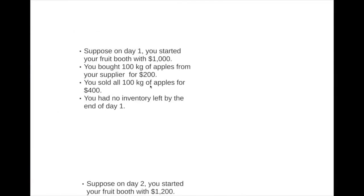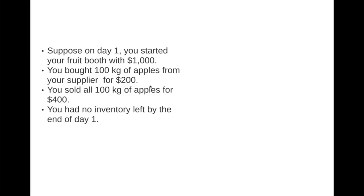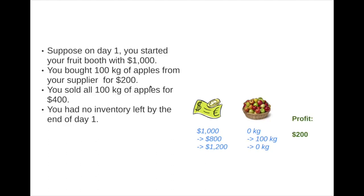Here we have three scenarios. Suppose on day one, you started your fruit booth with $1,000. You bought 100 kilograms of apples from your supplier for $200. You sold all 100 kilograms of apples for $400. You had no inventory left by the end of day one. Summarizing all transactions: you started with $1,000, went down to $800 due to the cost of inventory, then went up to $1,200 because of the $400 revenue. You'll be happy to report a $200 profit. Very straightforward.